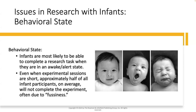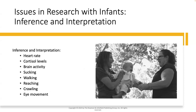And finally, the third issue we'll be discussing is inference and interpretation. It is hard to understand or know what infants and toddlers are thinking, so we use inference and interpretation instead. We look at heart rates, cortisol levels, brain activity, levels of sucking, walking, reaching, crawling, and eye movement.